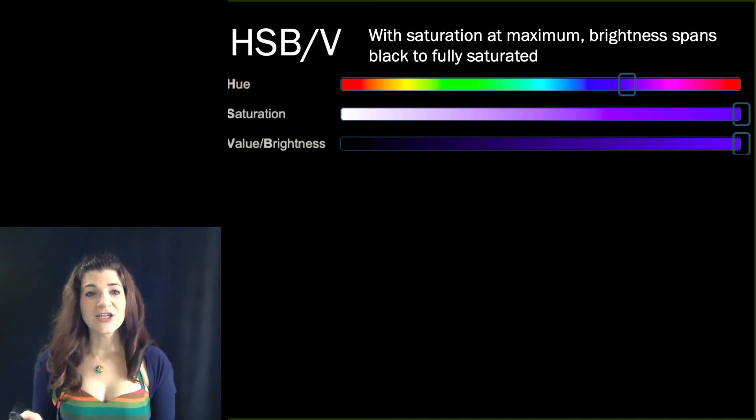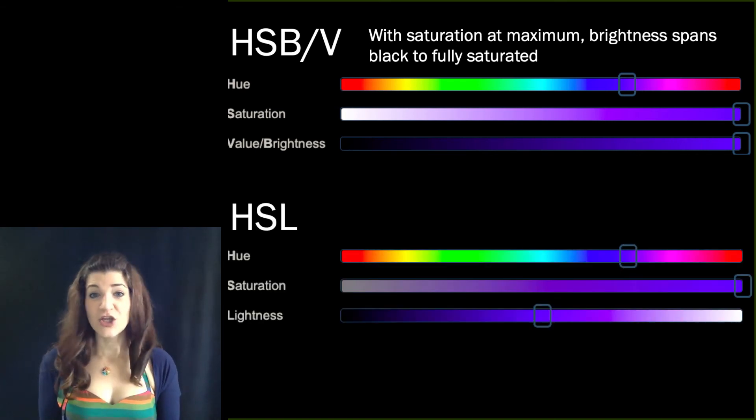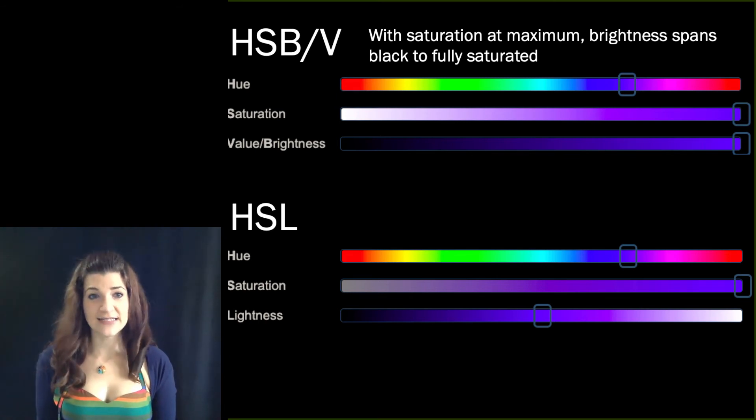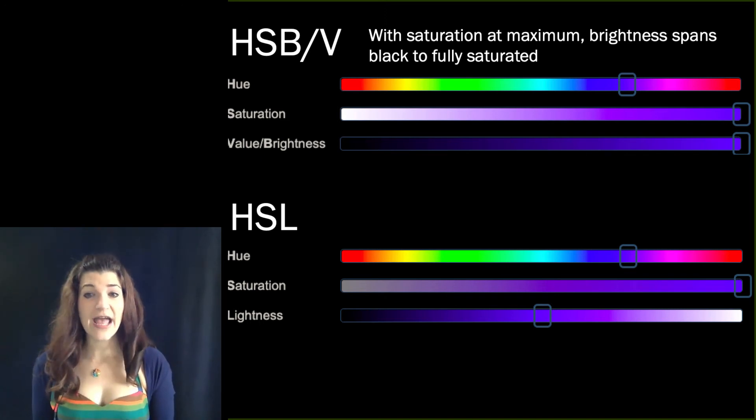So rather than the HSB scheme, people sometimes describe color using an HSL scheme, hue, saturation, and lightness. So in this model, hue is identical to the hue and hue saturation brightness. Saturation still refers to purity, but here the lowest level of saturation is gray rather than white.